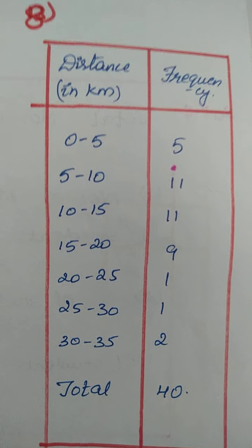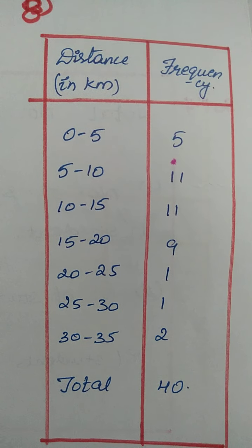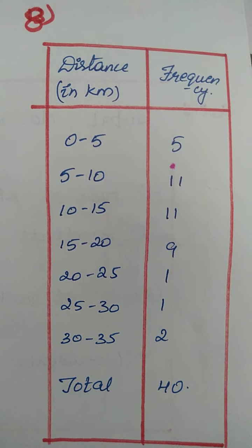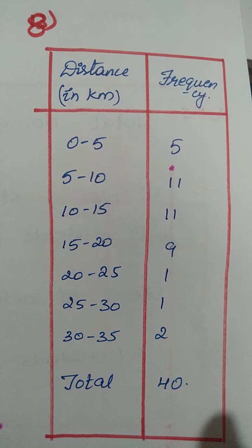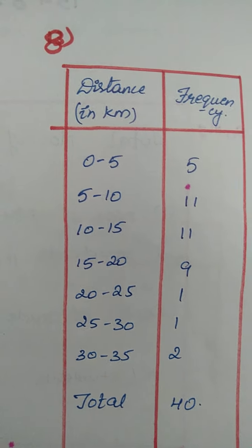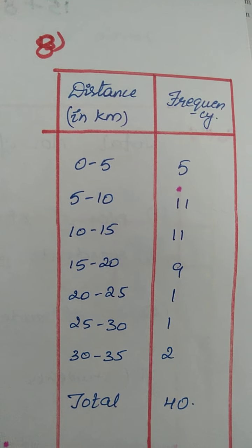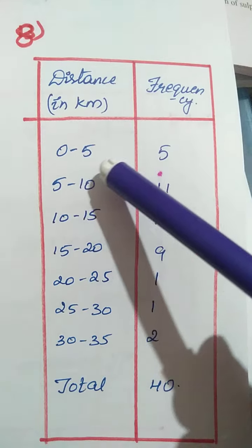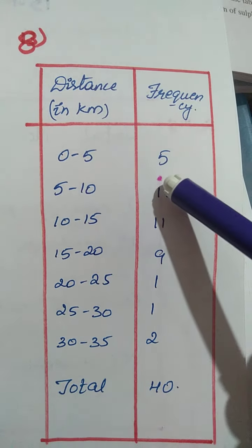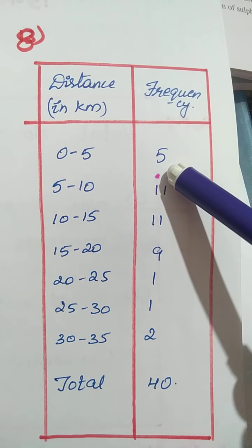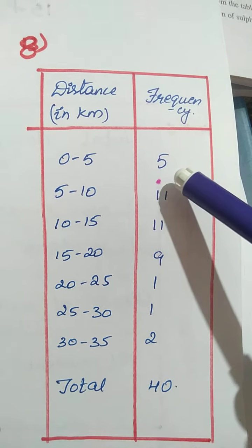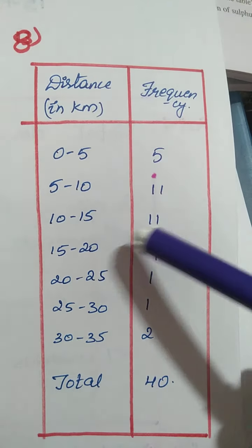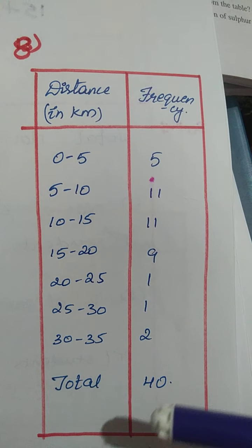This is your frequency distribution table for question number 8, referred from exercise 14.2 question number 2. I have grouped the data first here children using 5 class intervals. From 0 to 5 kilometers, 5 members are there. And 5 to 10, there are 11 members. 10 to 15, there are 11 members. Similarly, I have grouped, and the total number of engineers are 40.